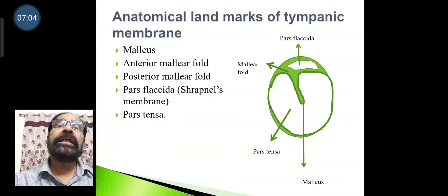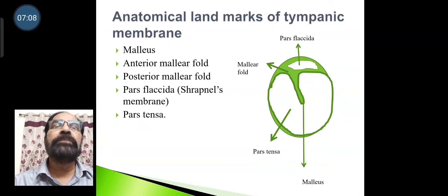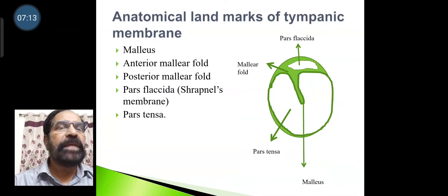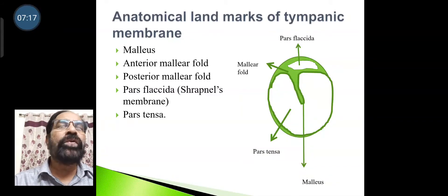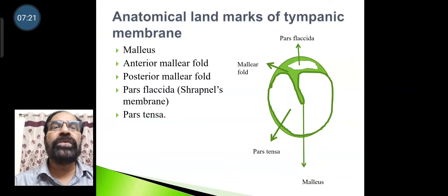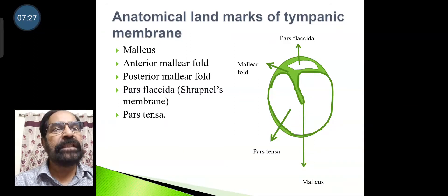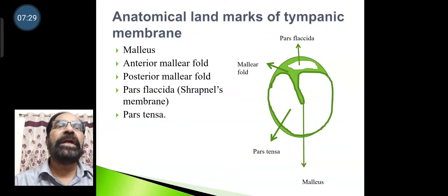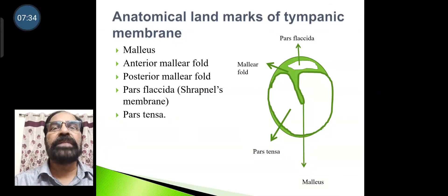Anatomical landmarks of the tympanic membrane include the handle of malleus, the anterior and posterior malleus folds attached to the malleus, the pars flaccida located at the roof, and the remaining part called pars tensa.